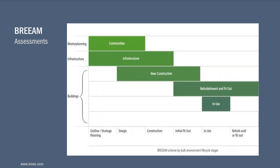Sticking with BREEAM — there are a number of different assessments, not just location versions but different assessments for different stages of the building's life cycle. New construction, refurbishment and fit-out are the most commonly known, but there are also communities, infrastructure, and in-use versions — all there to capture the full life cycle of the building. They aren't standalone; for example, you can achieve credits in new construction for the intention of undertaking credits in-use. In BREEAM 2018 new construction UK, the energy credit includes credits for monitoring, verification, and performance in-use.